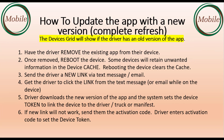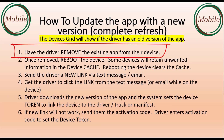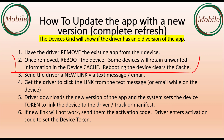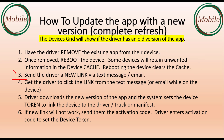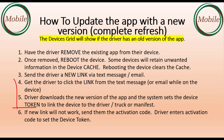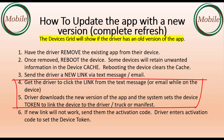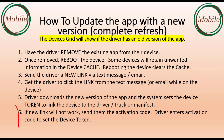The complete refresh way to upgrade the app is as follows. Have the driver remove the existing app from their device, then reboot the device to clear the cache memory. Dispatch then sends the driver a new link via text. The driver clicks the link in the text message, which downloads the latest version of the app and sets the device token to link the device to the driver profile.